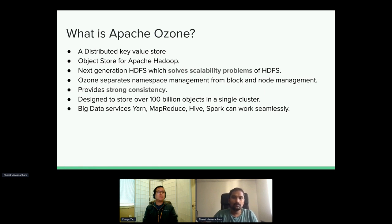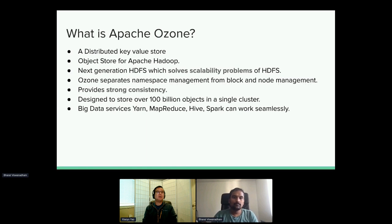The Ozone project was proposed to introduce an object store for Apache Hadoop so that HDFS can work best for large files while Ozone can work very well for small file issues that challenge the stability of HDFS clusters. Ozone solves scalability issues by first separating the namespace — HDFS NameNode has large heap requirements because it maintains both namespace metadata and the corresponding blocks for each file. Separating this namespace allows us to scale naming services and block services independently. Ozone also provides strong consistency and has been tested at scale with billions of objects in a single cluster.